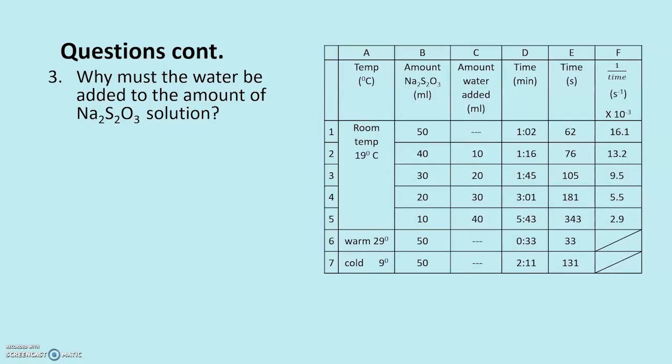Question three. Why must the water be added? Well, I've explained this one already. Here it goes again. The total volume must be the same. So we added 10 mls of acid to 50 mls of sodium thiosulfate in the first measurement. Subsequent ones, we added less of this and we topped it up with the amount of water to make sure that the volume was the same.